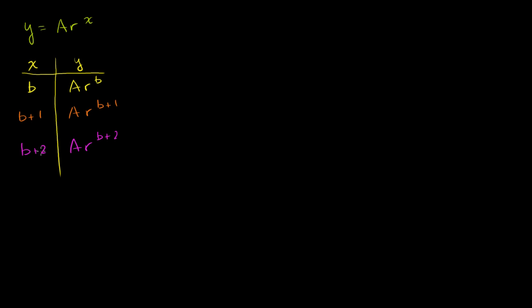If this was 0, this was 1, this is 2. If this is negative 5, this would be negative 4, this would be negative 3. So let's see what happens with our y.